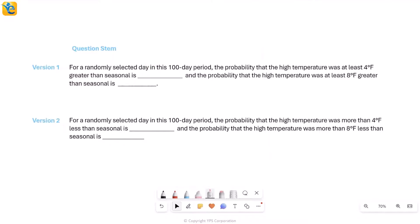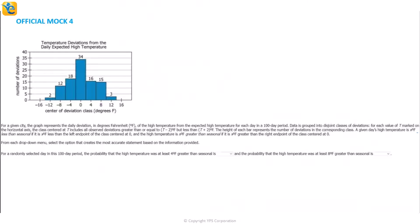Let's start with the first one. In a given city, the graph represents the daily deviation in degrees Fahrenheit of the high temperature from the expected high temperature, which means we have an actual high temperature and we have what was expected, and the difference between these two is the deviation. That is what is plotted in the graph here. Data is grouped into disjoint classes - no overlaps of deviations. Then it explains how that grouping has been done. For each value of t marked on the horizontal axis, there are many values marked here, negative 16 through 16.